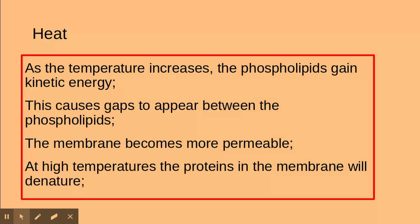More material and more liquid will start to leak out of or into the cells. Also, when you get to a high temperature, the proteins that are embedded within the membrane will also denature, and this will further increase the permeability of that particular membrane. So that's all to do with an increase in temperature.